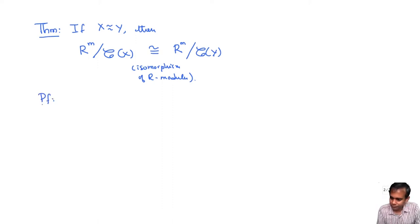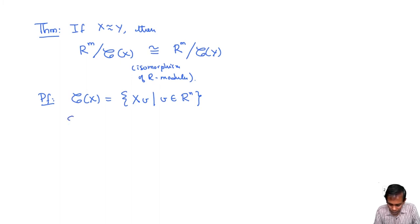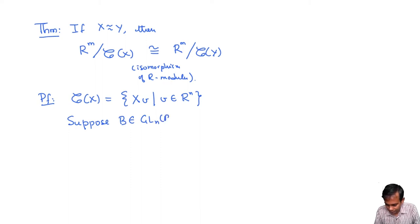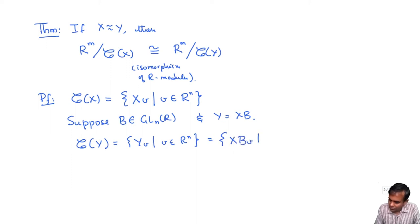We've already seen that every finitely generated module over a Noetherian ring is of this form, so we can use this equivalence notion to understand when two modules given in this form are actually isomorphic. So how do you prove this? The column space of matrix X is all vectors of the form Xv, where v is a column vector in R^n. Now suppose B belongs to GL_N(R) and Y = XB. Then the column space of Y is {YV : V ∈ R^n} = {XBV : V ∈ R^n}. But BV itself is a vector in R^n, so this is contained in the column space of X.